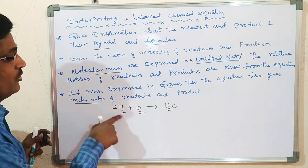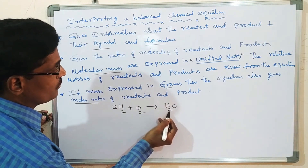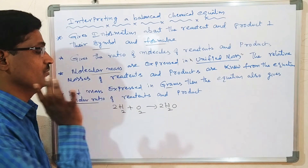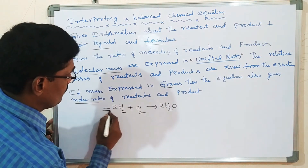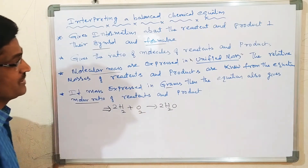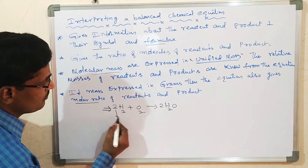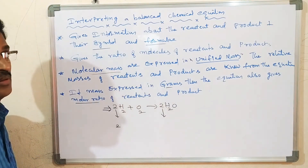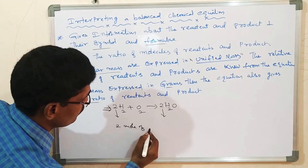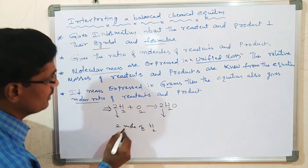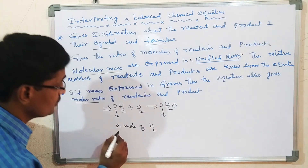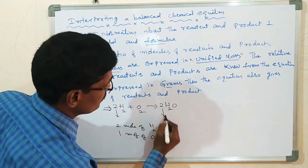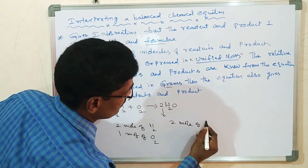To balance it, I have to put a coefficient of 2 in front of H₂ and 2 in front of H₂O. Now the equation is balanced. The coefficient number is what you look at for molar ratio. So 2 in front of H₂O means 2 moles of H₂O. Where there is no number shown, you represent it as 1 — so 1 mole of O₂. The product side has 2 moles of H₂O.